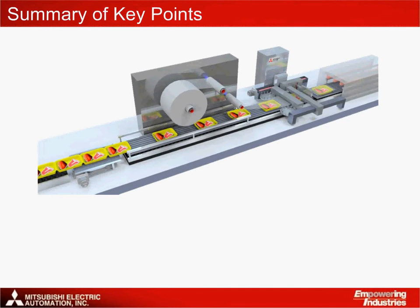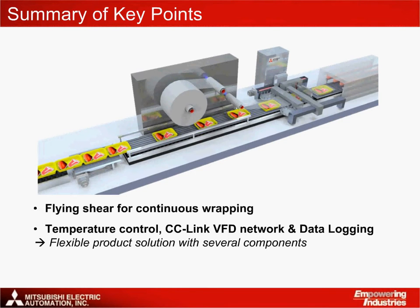In summary, the wrapping solution provided by Mitsubishi Electric highlights three key features that boost productivity and bring significant advantages to the end user. The flying shear operation for continuous wrapping increases throughput and improves overall equipment effectiveness. The temperature control, CC-Link VFD network, and data logging functions reduce machine downtime, help to eliminate waste material, and improve machine performance. The easy-to-use HMI interface brings a customizable and visual solution for easier troubleshooting and better consolidated control management.